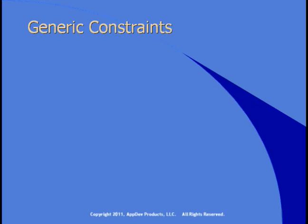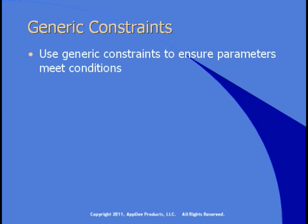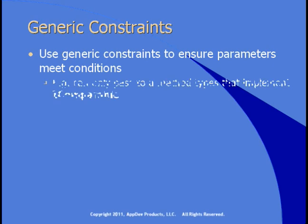Another thing you can do with generics is use constraints. You can use a generic constraint to enforce a rule that parameters passed to a method meet a condition. For example, you can declare that you can only pass to a particular method types that implement iComparable. Let's go see a demo of how you'd use a generic interface and generic constraints.